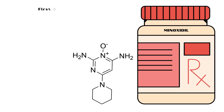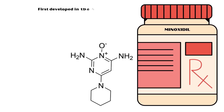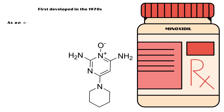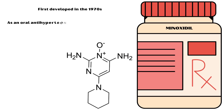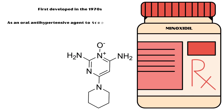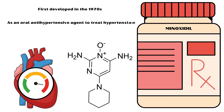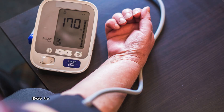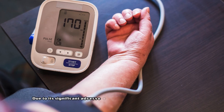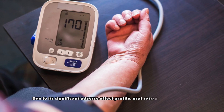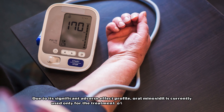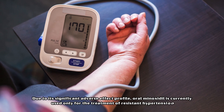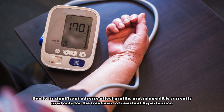Minoxidil was first developed in the 1970s as an oral antihypertensive agent to treat high blood pressure by causing peripheral vasodilation in the circulation. However, due to its significant adverse effect profile, oral minoxidil is currently used only for the treatment of hypertension.